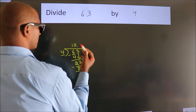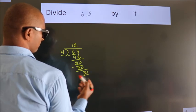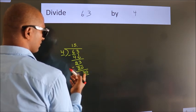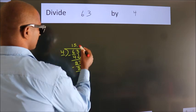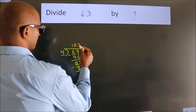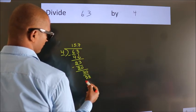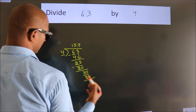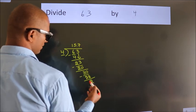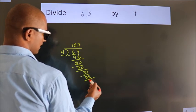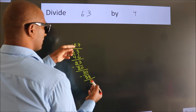Since there are no more numbers to bring down, what we do is we put a dot and take 0. So 30. A number close to 30 in the 4 table is 4 sevens 28. Now we subtract. We get 2.